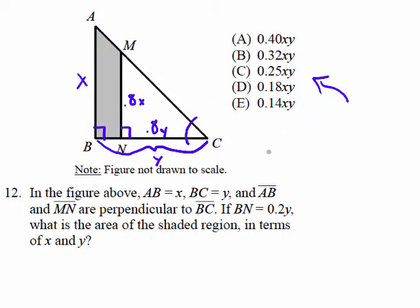Well, the whole triangle ABC - the area of triangle ABC is ½XY. And the area of triangle MNC, which is the unshaded region - this is the area of the whole,